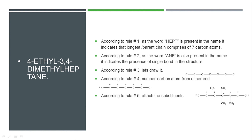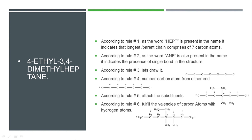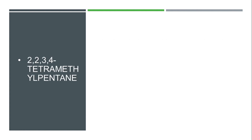We attach an ethyl group at position 4 and two methyl groups at positions 3 and 4. After attaching all substituents, we have the carbon skeleton structure. Then we fulfill all remaining carbon atom valences with hydrogen atoms to complete the structure of 4-ethyl-3,4-dimethylheptane.